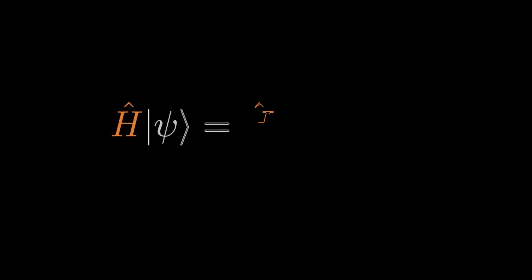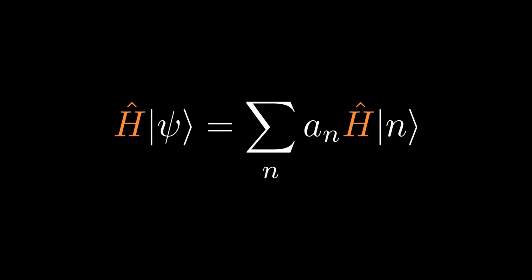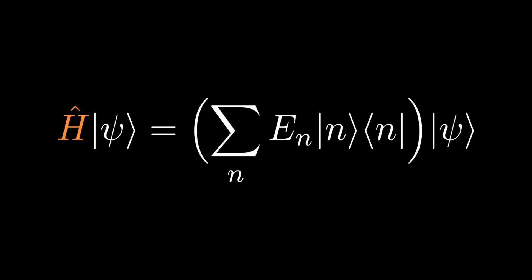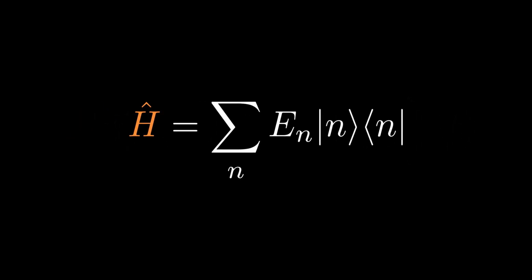We deduce the expanded form of the operator by using it on the generic state ket ψ, then expand the state as a sum of the eigenstates of the operator. We use the linearity of H to pass through the sum, then H is replaced by its eigenvalue upon operating on one of its eigenstates, ket n. Then after some further rearrangement, we can conclude H equals to the sum over n, En, ket n, bra n.